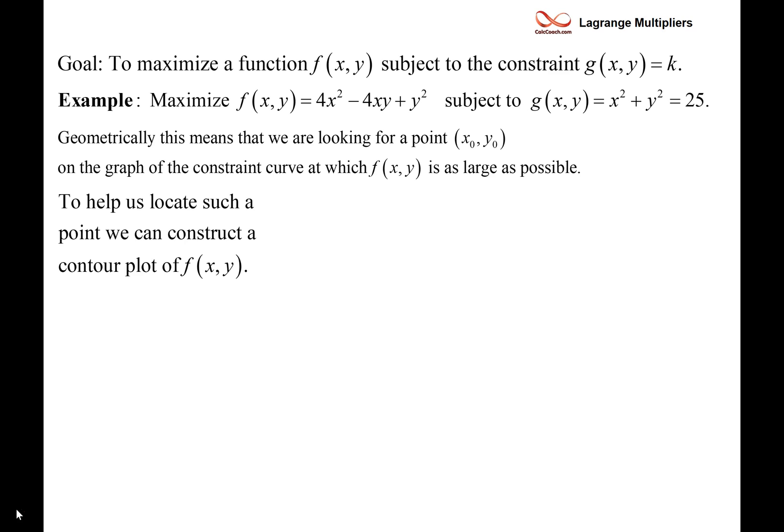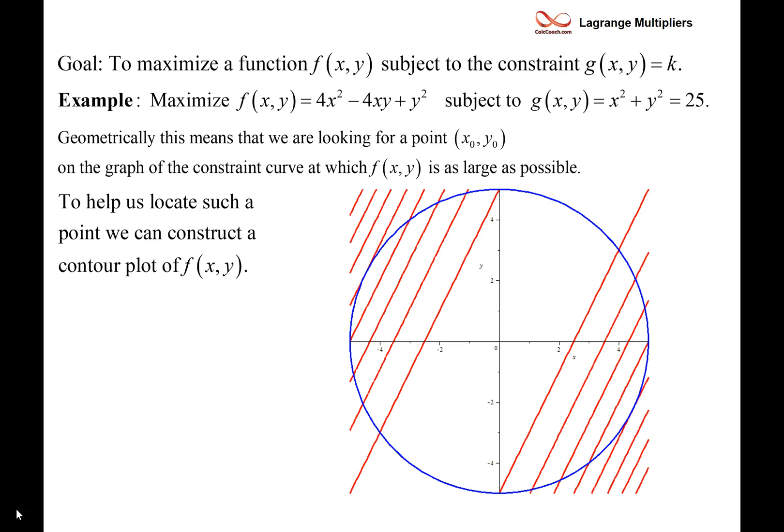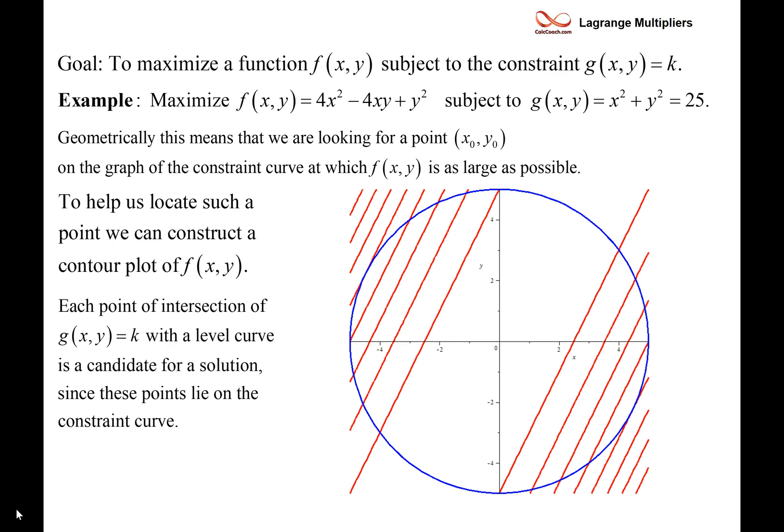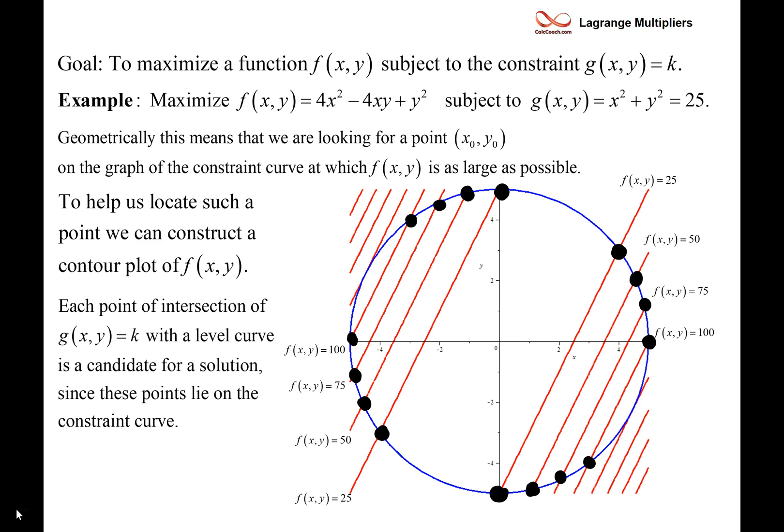We want to locate such a point by constructing a contour plot. The red lines represent different altitudes of the function f — different z values, different outputs. The blue graph represents the constraint curve g. Each point of intersection between the two is a candidate for a solution since they're points that lie on both at the same time. I've marked off a few of them: when f is 25, when f is 50, when f is 75, when f is 100 — the different altitudes of f coming from points that are also on the circle of radius 5.